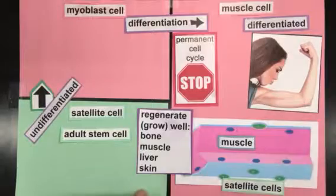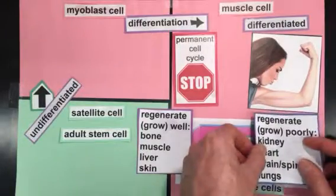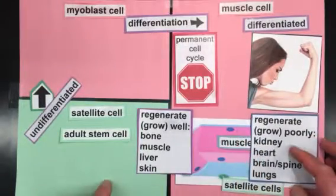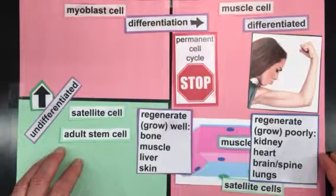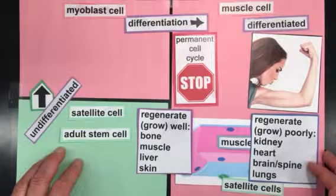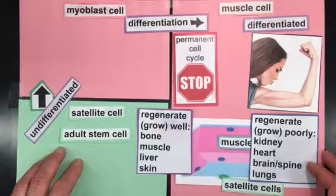On the other hand, we have tissues in our body that don't grow and regenerate well. Those include kidney, heart, brain, spine, lungs. For example, if a person is injured in an accident and paralyzed, it's very difficult to recover from that process.